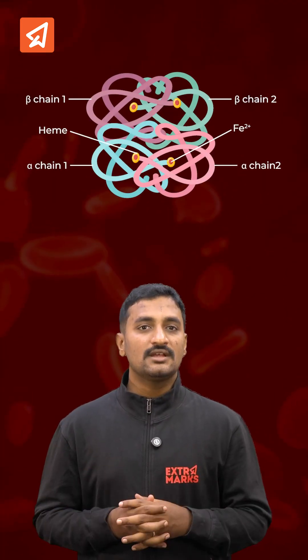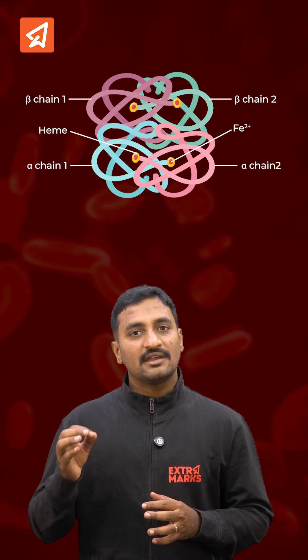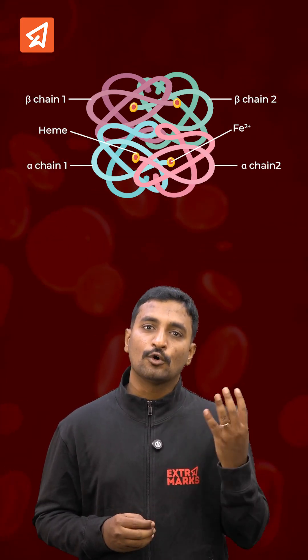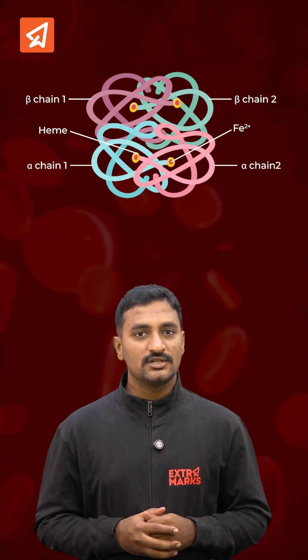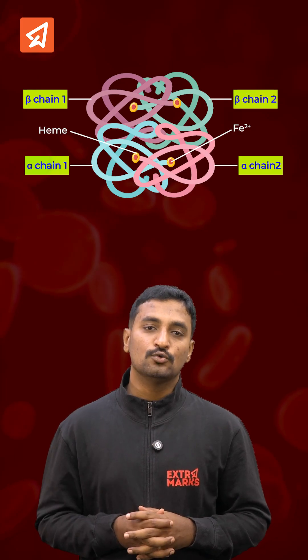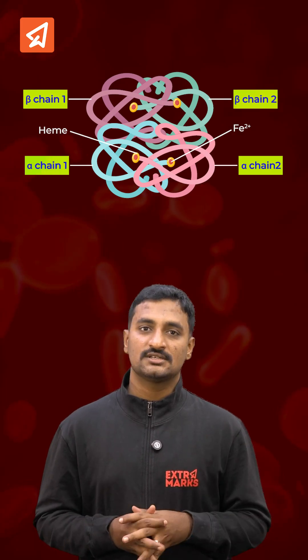Hemoglobin is a tetrameric protein compound which is basically made up of four polypeptide chains — two alpha chains and two beta chains.